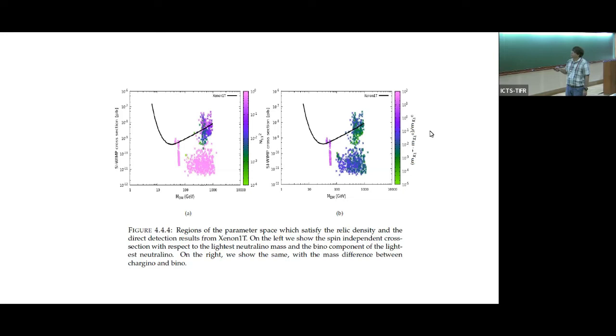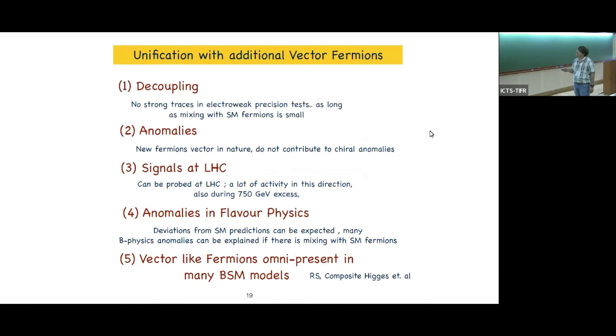These things give you at the weak scale very nice spectra. It can satisfy the relic density, give you co-annihilations, escape the direct detection bounds. Some regions are also like focus point regions which can lead to nice Higgs dark matter. In the last 10 minutes, I'll just talk about one example of BSM physics without fine-tuning. With fine-tuning, the basic idea here is that you want to replicate all the features which supersymmetry has but without supersymmetry.